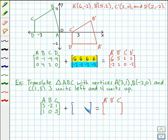What I want you to do now is fill in a translation matrix for three units left and four units up, then add the matrices together to get the coordinate matrix for the image. When you've done that, hit the continue button to check your result with mine.